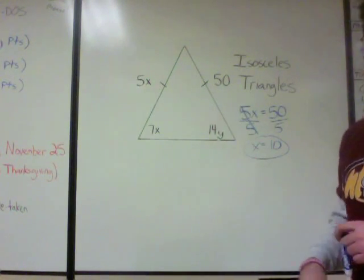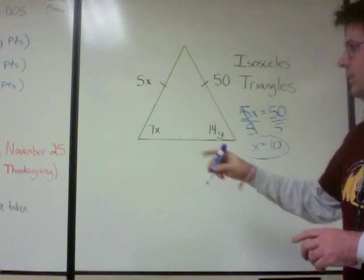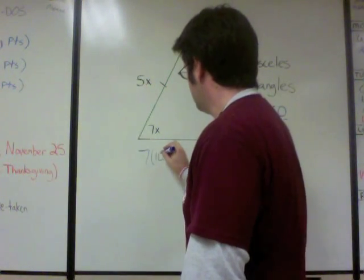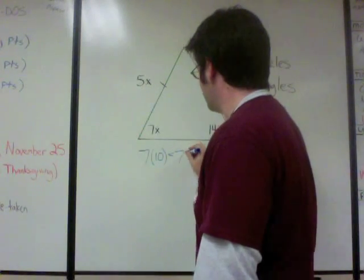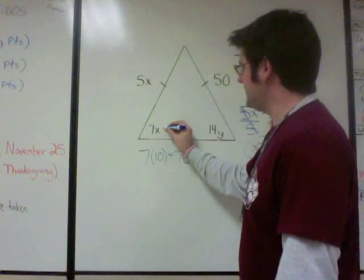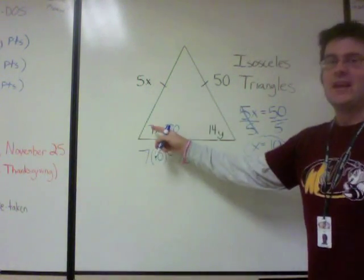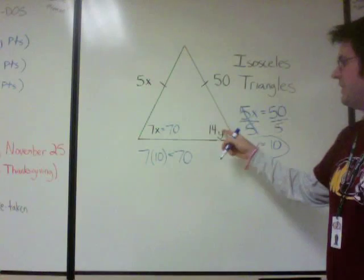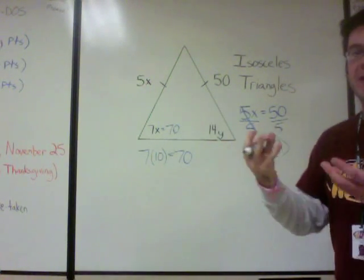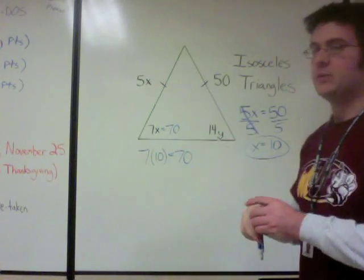Now that we know x is 10, we can figure out what y is. Let's plug x in at 7x: 7 times 10 equals 70, so we know that 7x is equal to 70. Now 7x is also going to equal 14y because of the isosceles triangle theorem — the two base angles are congruent.